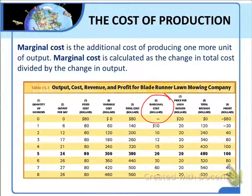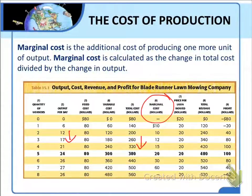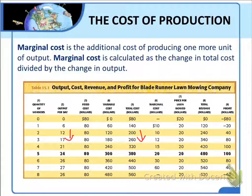Marginal cost is calculated as the change in total cost divided by the change in output. For example, if Blade Runner increases its output from 12 to 17 lawns, an increase of 5 lawns, total cost rises from $200 to $260, and that's an increase of $60. So the marginal cost per additional lawn is $60 divided by 5, which equals $12.